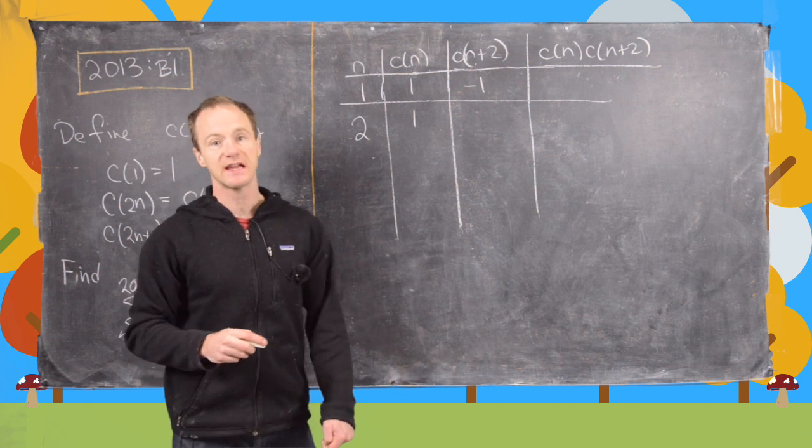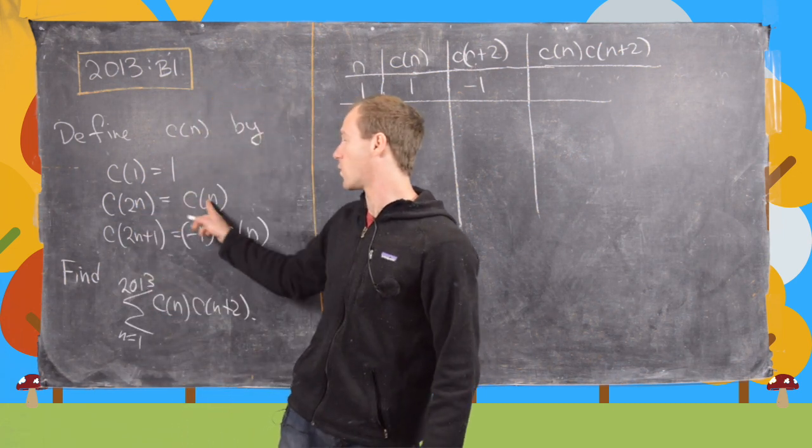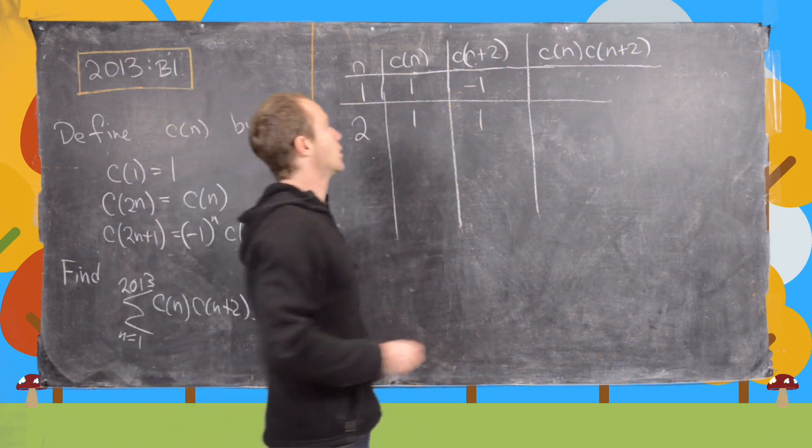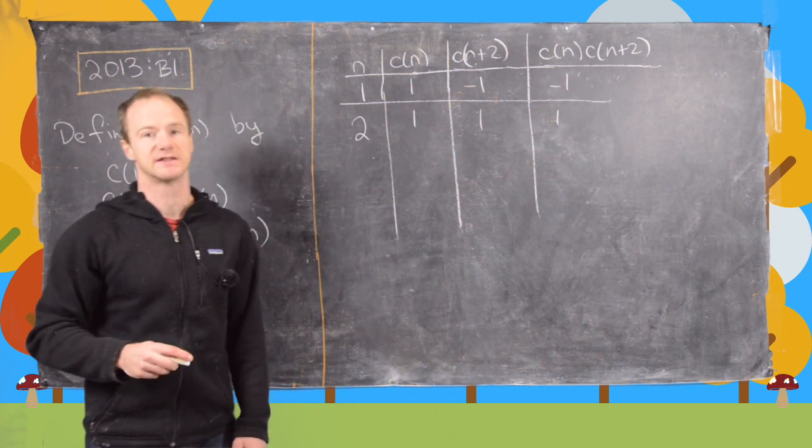And then next we have c(4). But again, by the same thing, c(4) is going to be c(2), which we've already decided is 1. Now let's work these products out. So this product is negative 1. This product is positive 1.